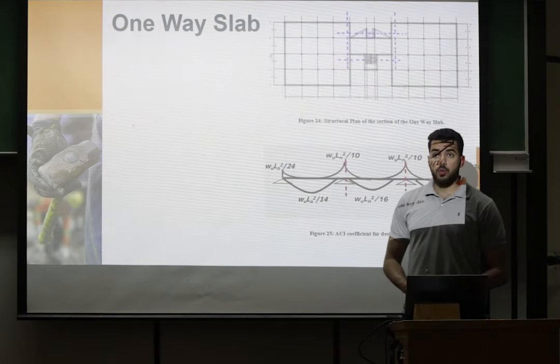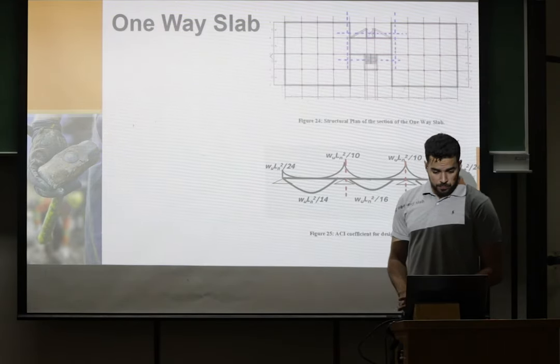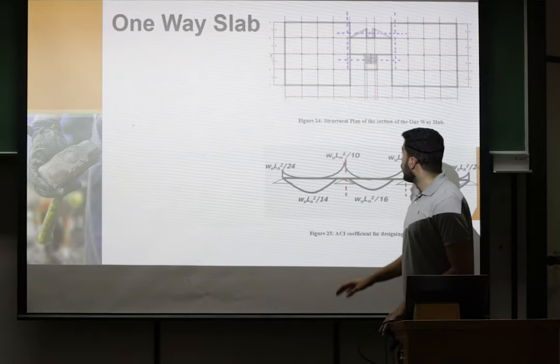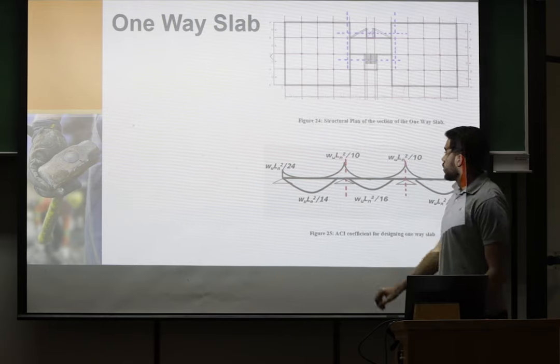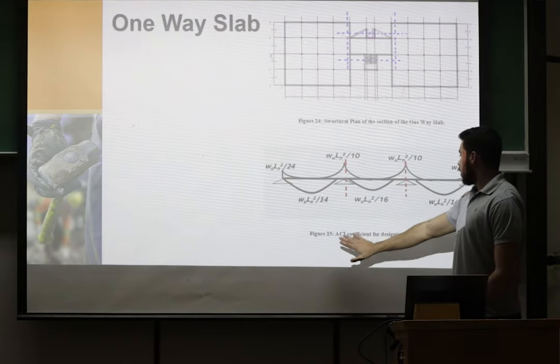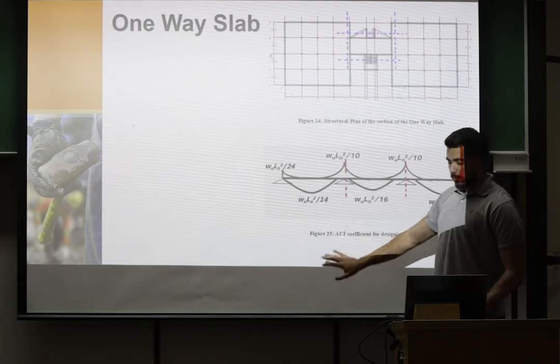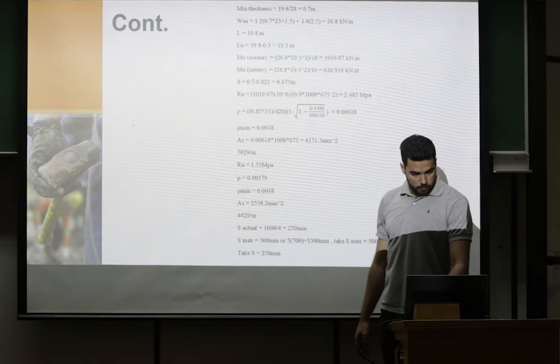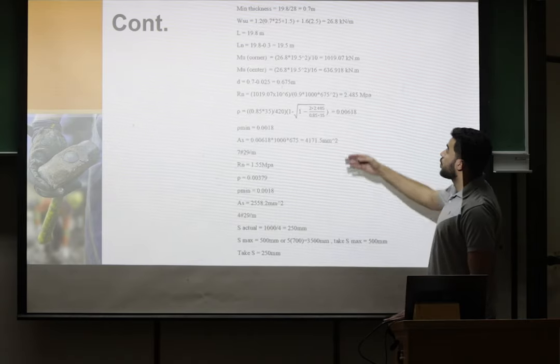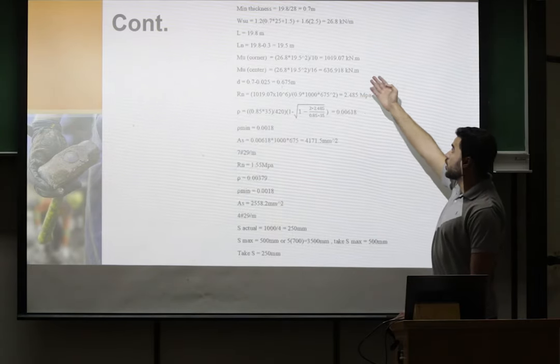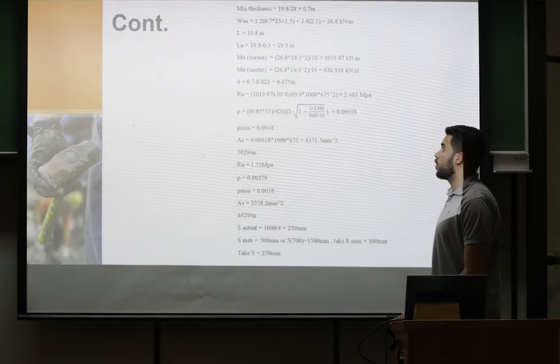Now I will talk about one-way slab. For one-way slab we will take this as reference. So we have ACI coefficient for design one-way slab, and we started to design by minimum thickness. Then we plug the minimum thickness in W ultimate.